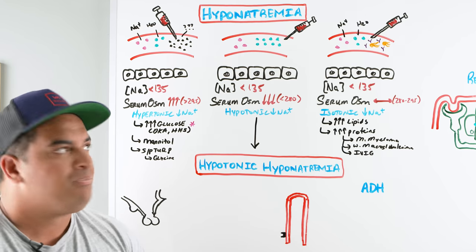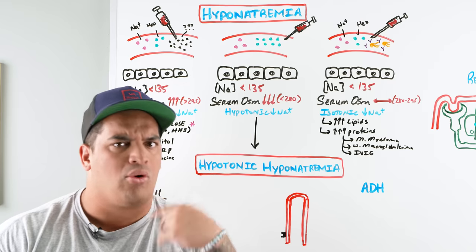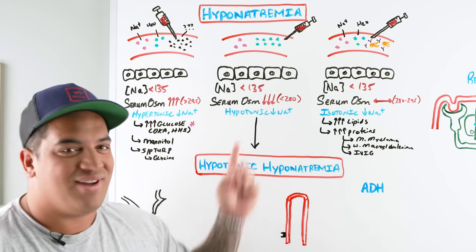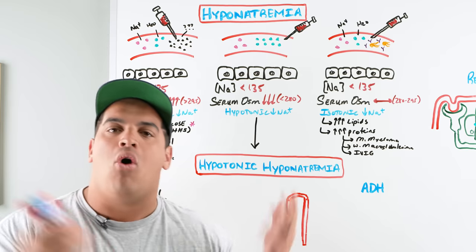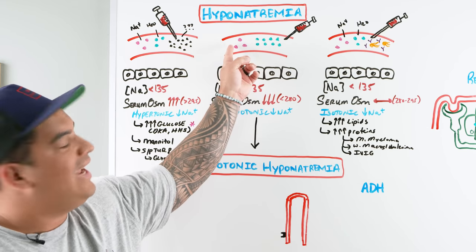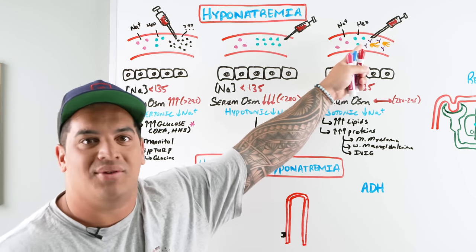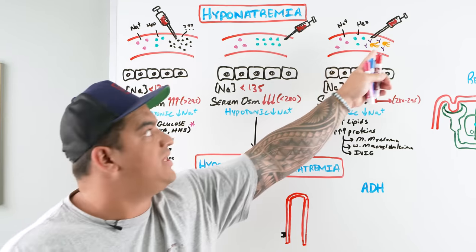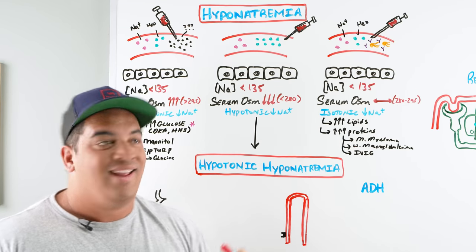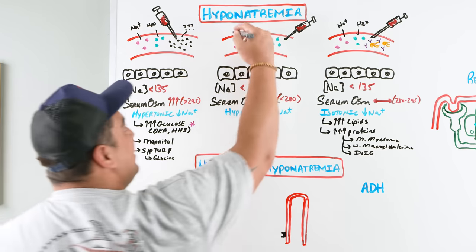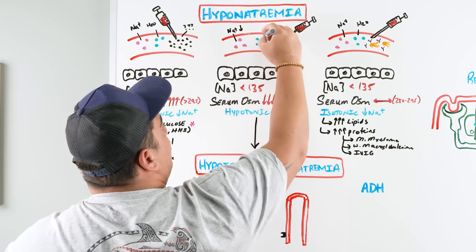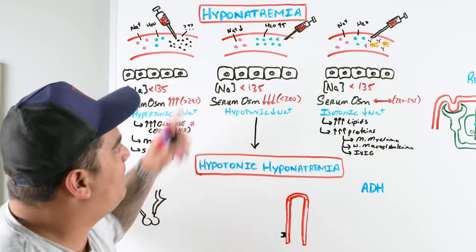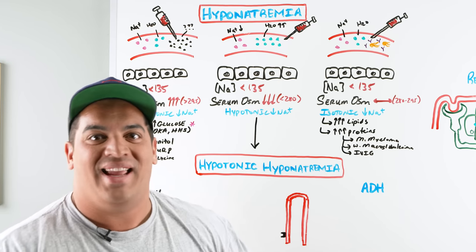A very important point: when patients have a sodium less than 135, the most common cause of a true hypotonic hyponatremia is a dilutional effect — there's more water relative to sodium in the blood. In hypertonic or isotonic hyponatremia, it was other molecules changing the tonicity. In true hypotonic hyponatremia, look at the ratio: there are fewer sodium molecules compared to water molecules. To figure out the cause, we check whether ADH is on or off.